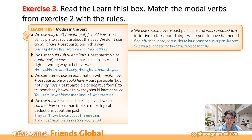Rule B: We use should, shouldn't have plus past participle or ought not to have plus past participle to say what the right or wrong way to behave was. Chúng ta sẽ dùng should, shouldn't have cùng với quá khứ phân từ hoặc là ought to have / ought not to have cùng với quá khứ phân từ để nói về cái cách đúng hoặc là sai của một cái hành vi nào đó. Ví dụ: He shouldn't have left early. He ought to have stayed — Anh ấy đáng lẽ ra không nên rời sớm. Anh ấy đáng lẽ ra nên ở lại. Nó nên hoặc là không nên xảy ra, nói cách khác, nó đúng hoặc là nó sai.